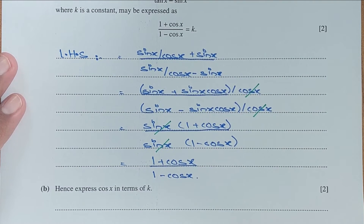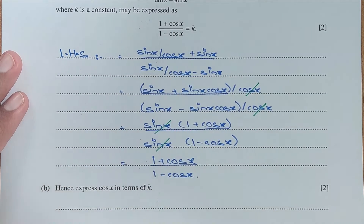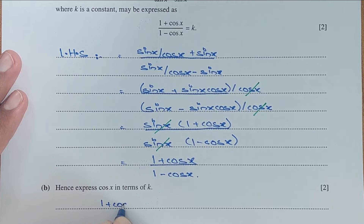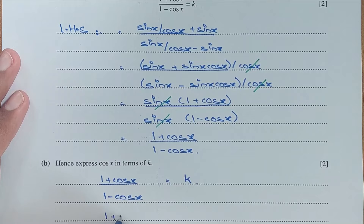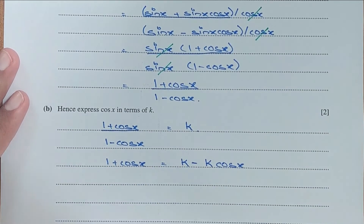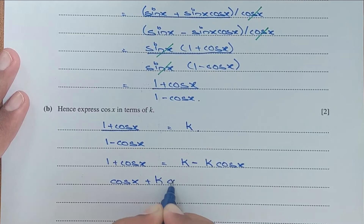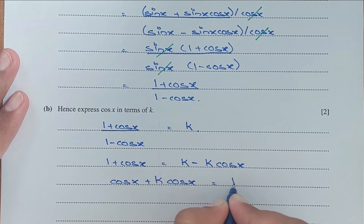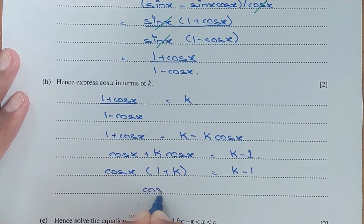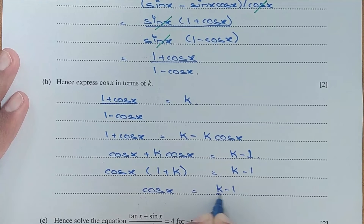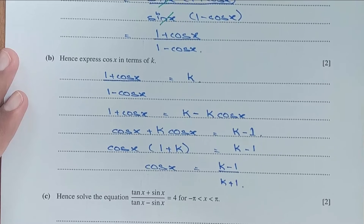For part b, express cos x in terms of k. We know that (1 + cos x)/(1 − cos x) equals k. Cross-multiplying: 1 + cos x equals k minus k cos x. Combining: cos x plus k cos x equals k minus 1. Taking cos x common: cos x(1 + k) equals k minus 1. So cos x equals (k − 1)/(k + 1).